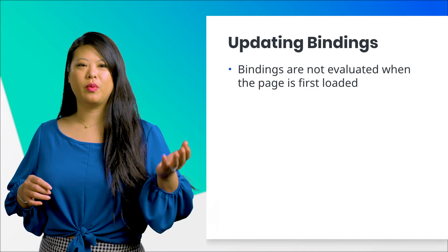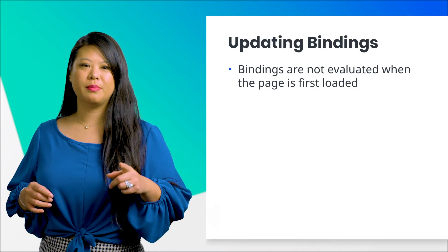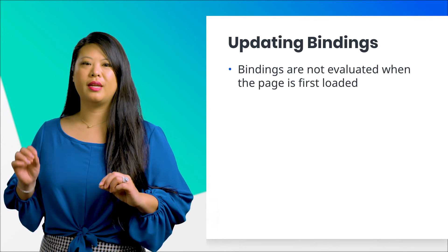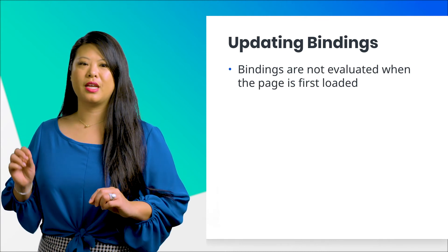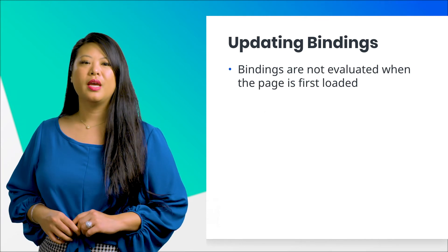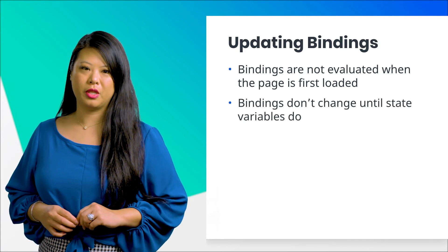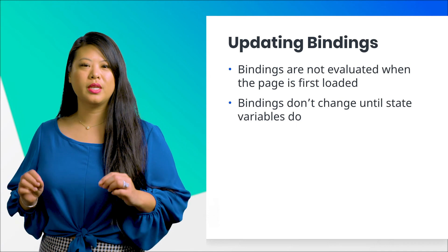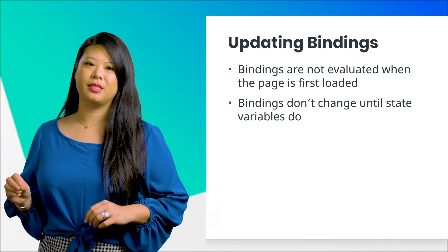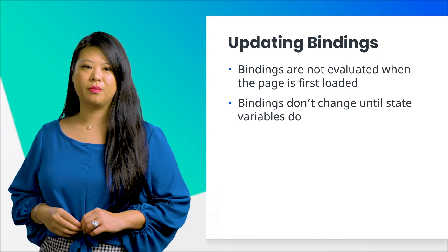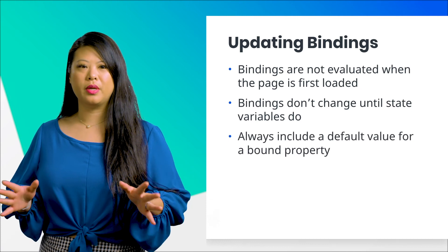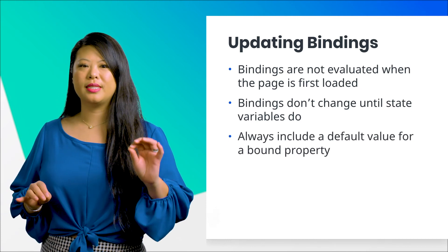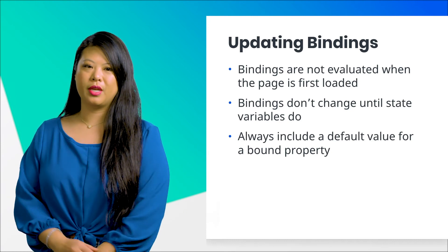Bindings are not evaluated when the page first loads. This means that binding expressions are not evaluated until after the first time state variables are updated. In our "hello AMP" example from earlier, the paragraph tag was initially empty. The text only appeared once we clicked the button and set a new message value. So to make sure your components look reasonable on page load, it's really important to include a default value for a bound property.